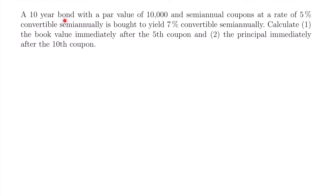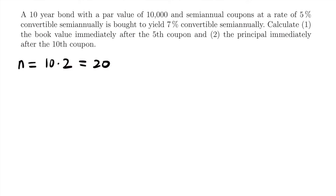For our second example: a 10-year bond with a par value of $10,000 and semi-annual coupons at a rate of 5% convertible semi-annually is bought to yield 7% convertible semi-annually. We need to calculate (1) the book value immediately after the fifth coupon, and (2) the principal immediately after the 10th coupon. Since coupons are semi-annual, N equals 10 times 2 equals 20 coupon periods.